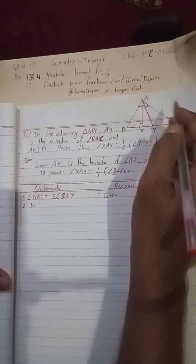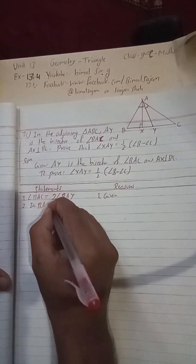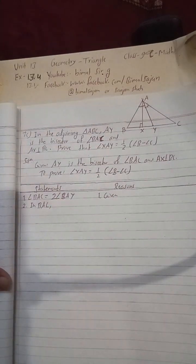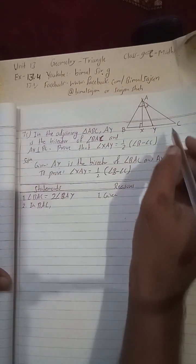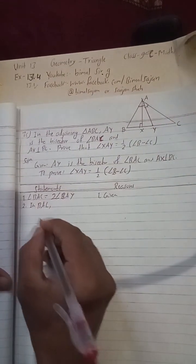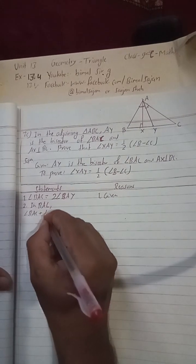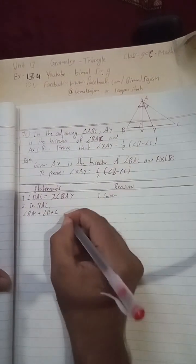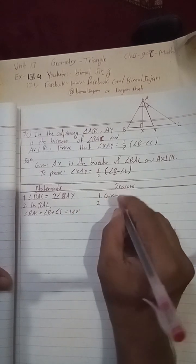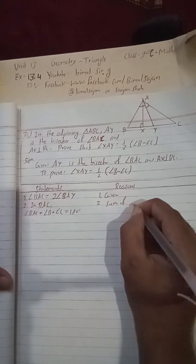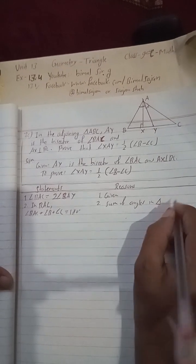Number two: in triangle BAC, the sum of all angles is 180 degrees. So angle BAC plus angle B plus angle C is equal to 180 degrees. The reason is: sum of angles in a triangle is 180 degrees.